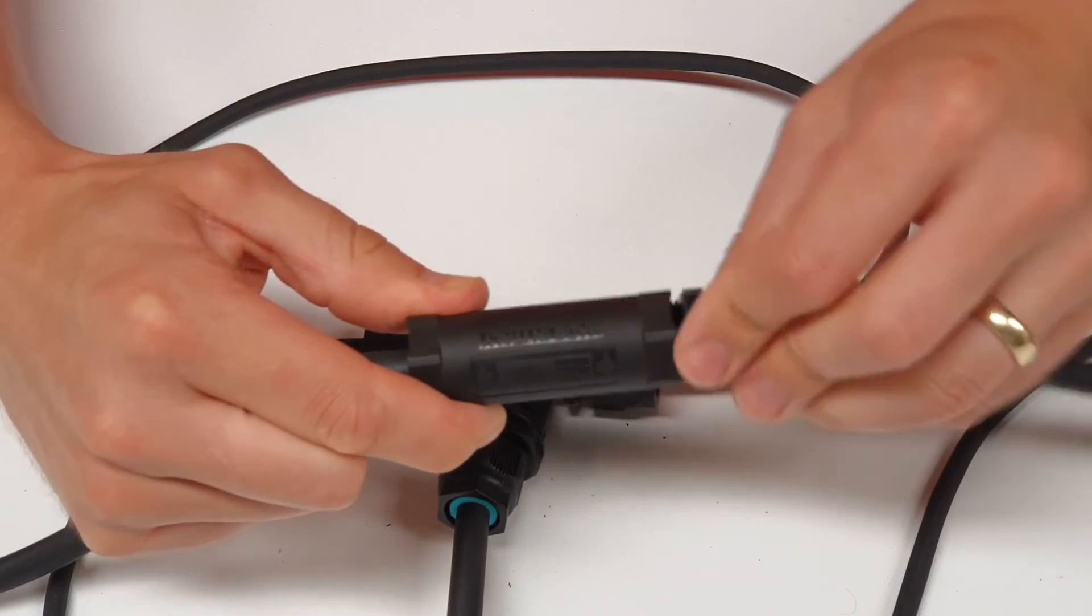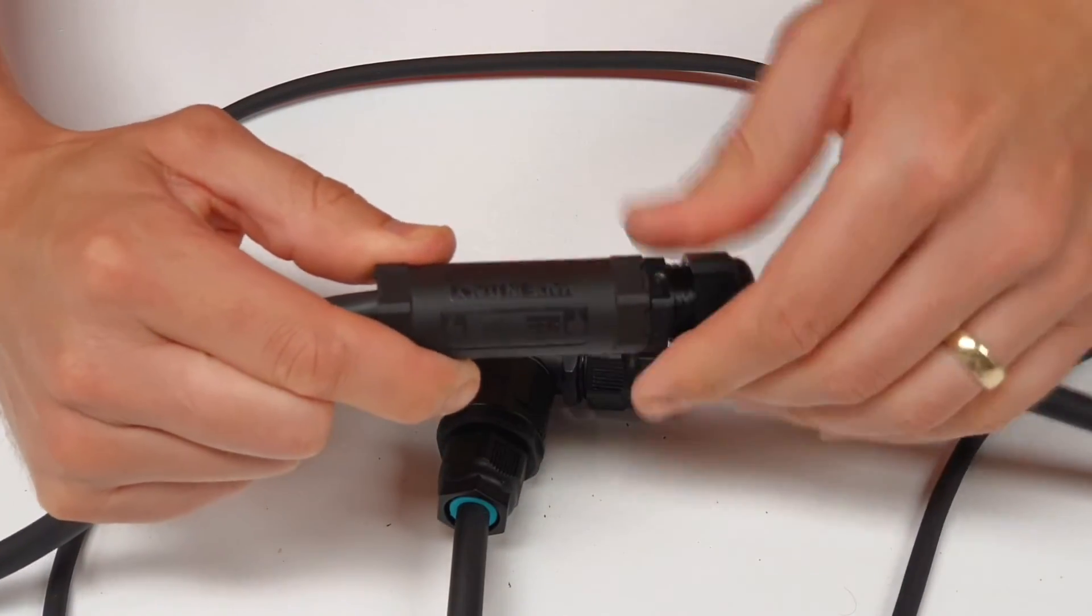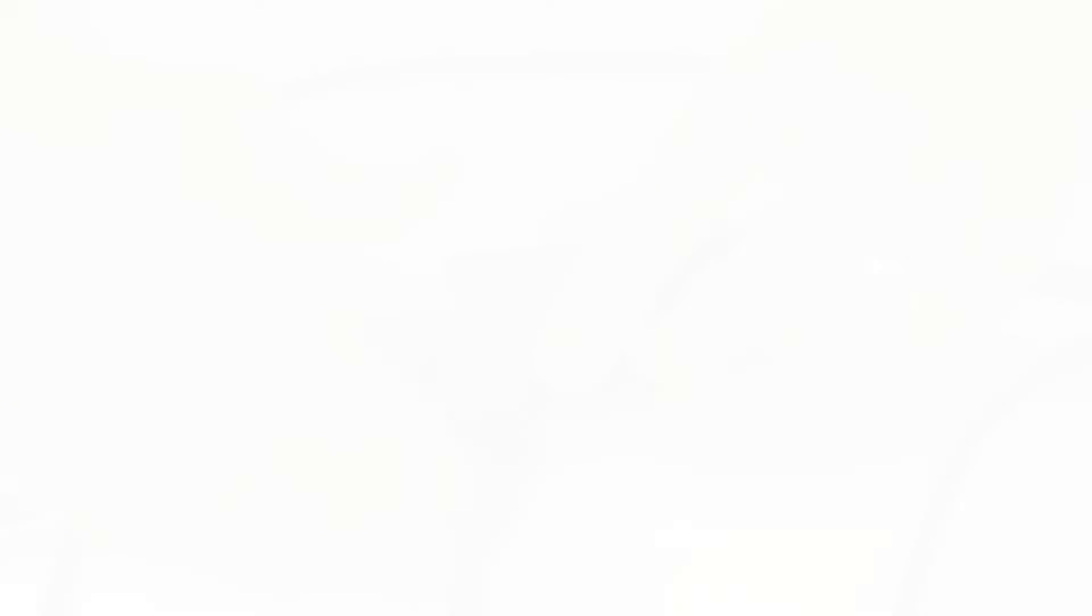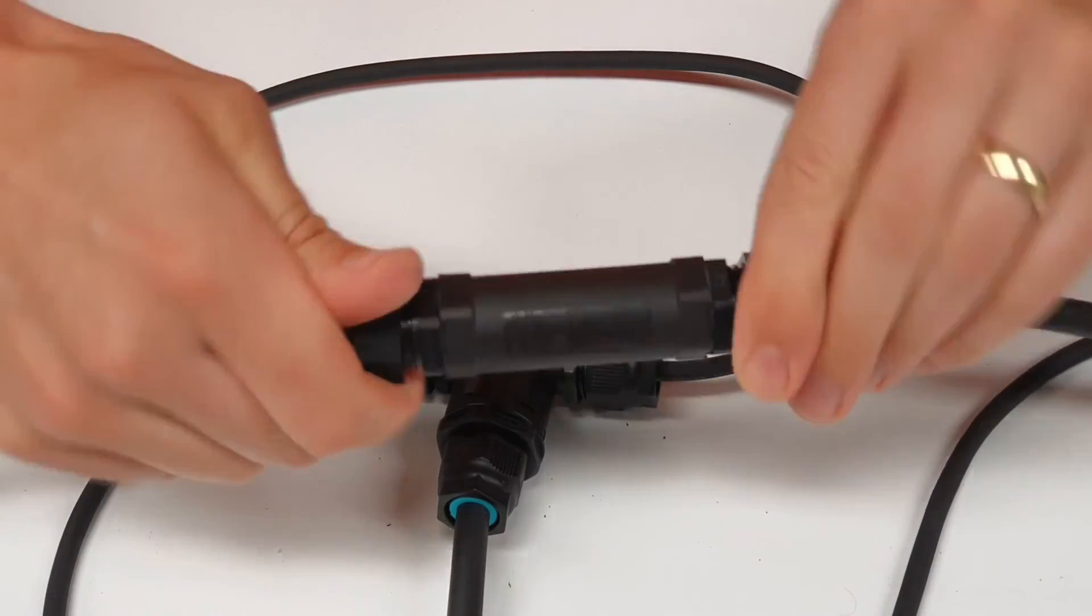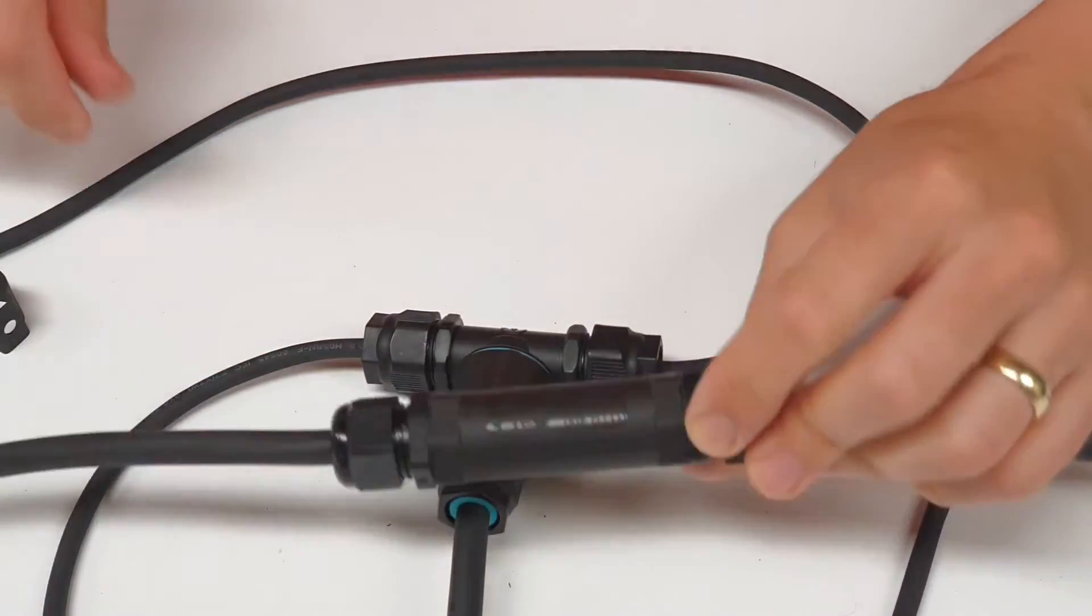Then tighten up the gland bodies at each end of the cylinder. It's recommended that you use a spanner just to nip it up with and then finally tighten up the gland nuts. And again tighten with a spanner. Job done.